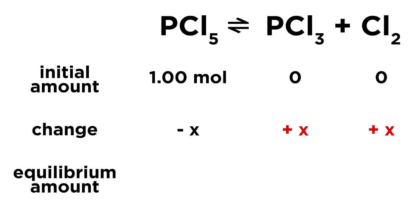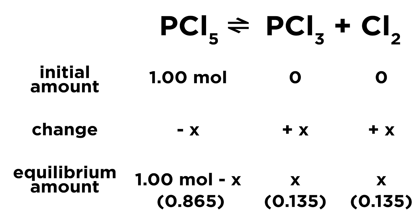Then lastly, we add up the initial and the change to give the amounts present at equilibrium. For the reactant, this is one minus x, and for the products it's simply x. We measured the final concentration of PCl3 as 0.135 moles, which here will correspond to x, and we therefore know all the other concentrations by plugging in x. Simple, no? Well, it can get trickier as we will see.